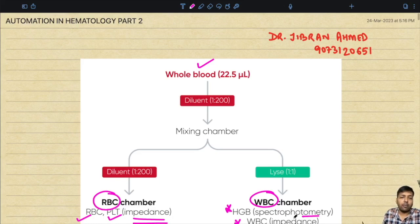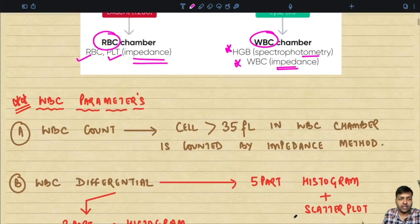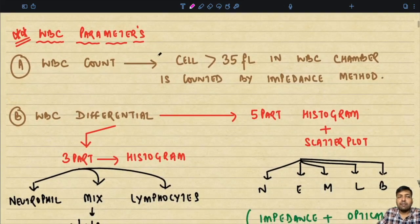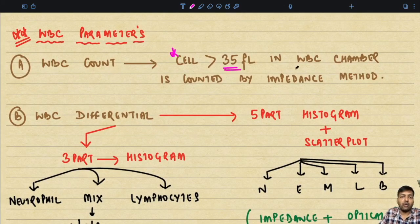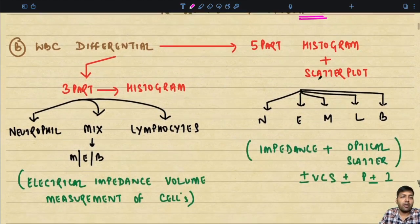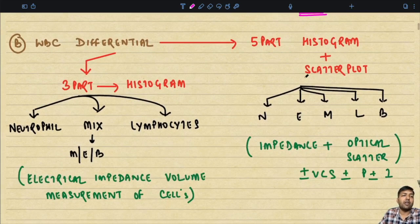Let us continue today's topic of discussion. Looking at the WBC parameters: any cell measuring more than 35 femtolitre in the WBC chamber is counted by the impedance method. The second important parameter is the WBC differential count.